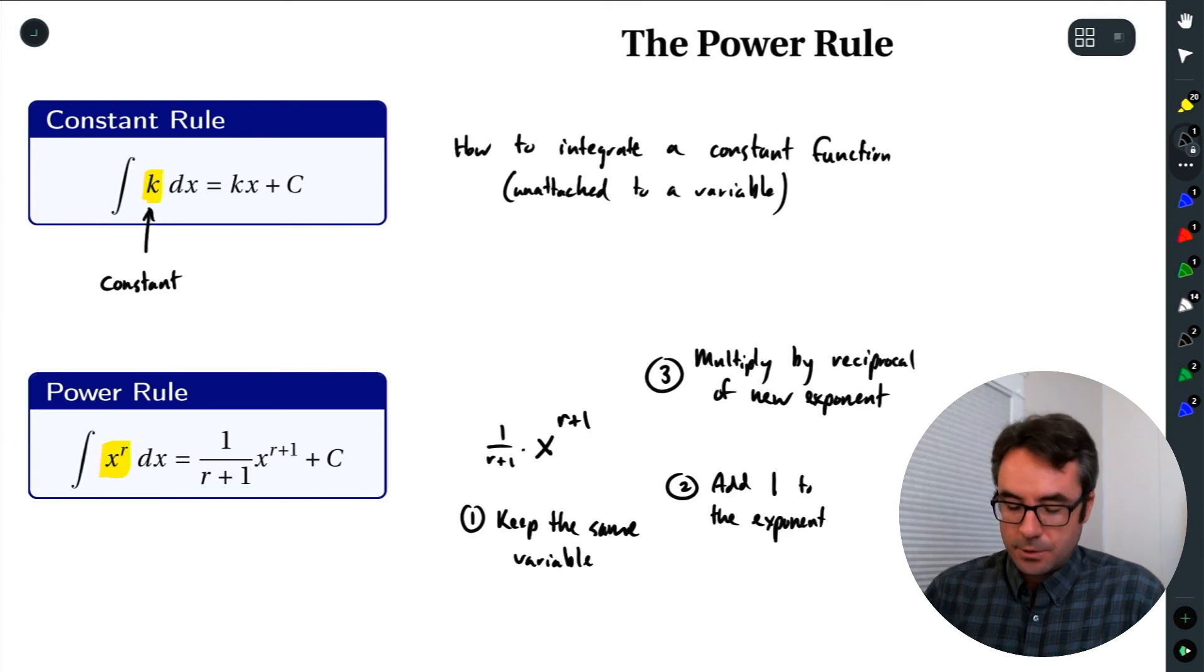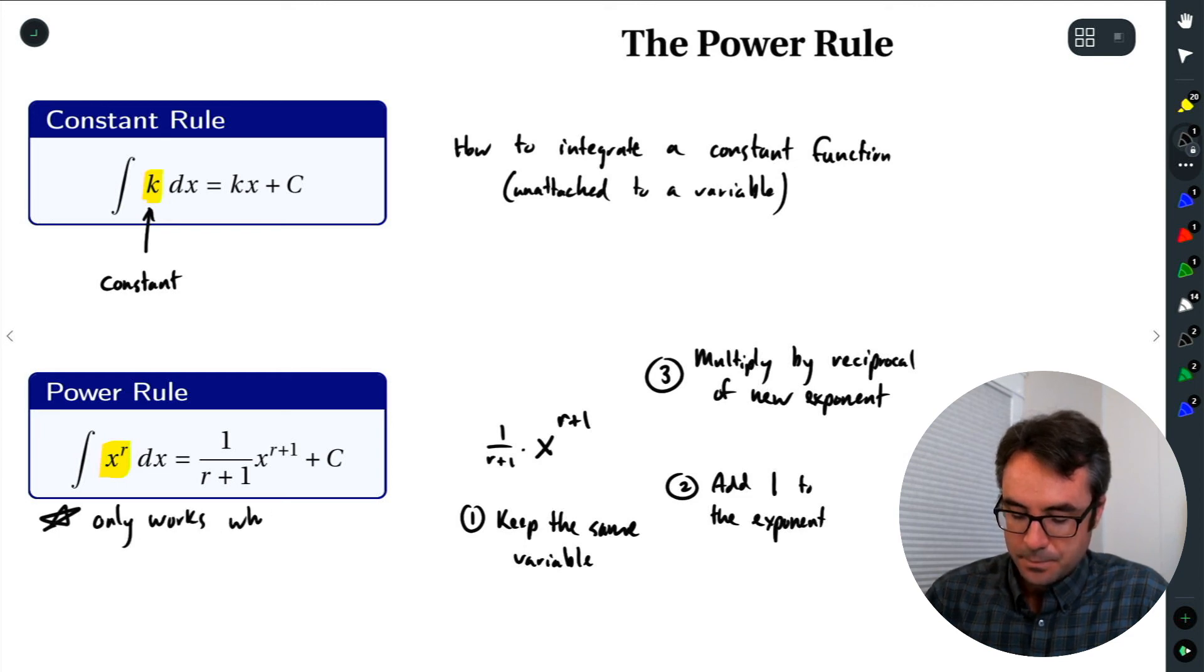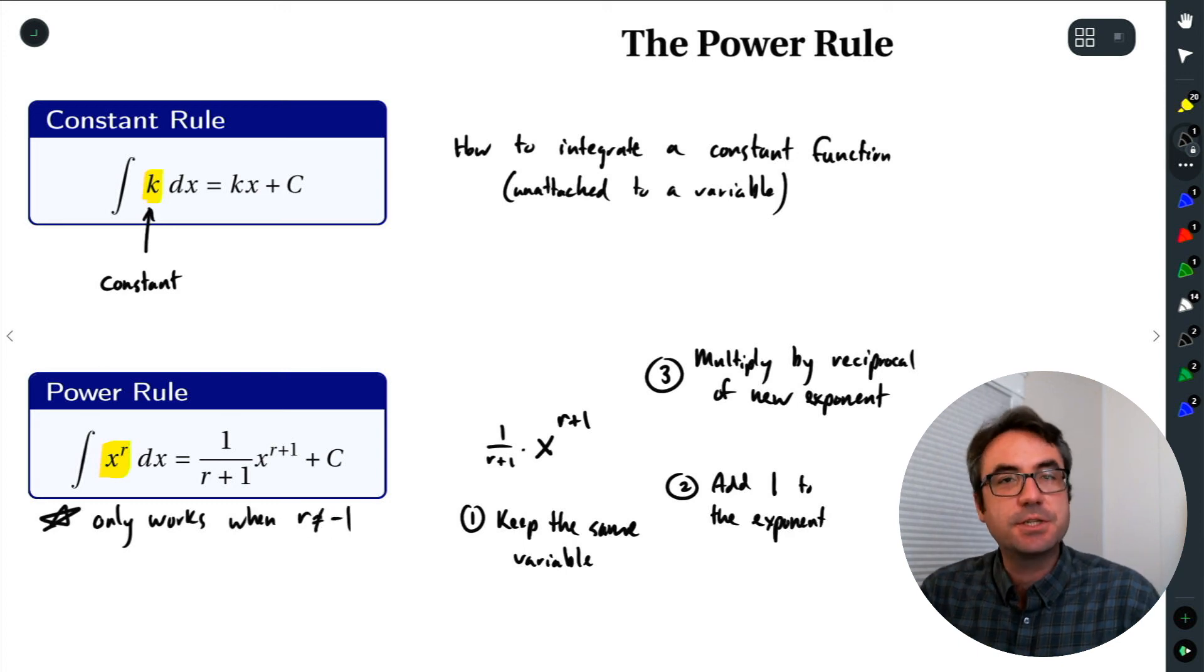Now, this power rule doesn't always work. There is a special case. So it's important. This only works when r does not equal negative 1. So it just about always works. If we have a power function, as long as this exponent is not negative 1, it works. The only time we run into an issue is if that exponent is negative 1.